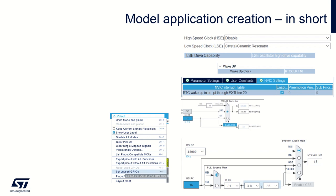Then I can switch to the timers, find the real-time clock peripheral, and activate the clock source. I will be using the most simple feature of the RTC, which is the wake-up timer. The wake-up clock will be set to the RTC clock, which is the LSE at 32 kHz divided by 16, so effectively a 2 kHz clock signal will be fed into the wake-up timer.